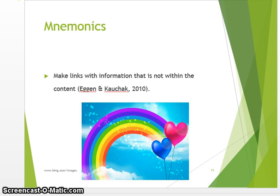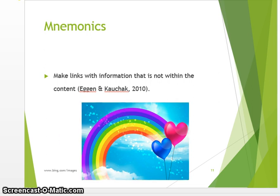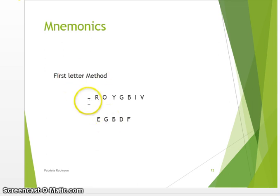Other techniques available to us are mnemonics, which help us make links with information not even within the content, but they allow us to recall factual knowledge. Look at the colors of the rainbow — it's really hard to remember red, orange, yellow, green, blue, indigo, and violet. We can just use an acronym: ROYGBIV — red, orange, yellow, green, blue, indigo, and violet. So all you walk into the room with is ROYGBIV, and once you know the colors of the rainbow, it will trigger that information.